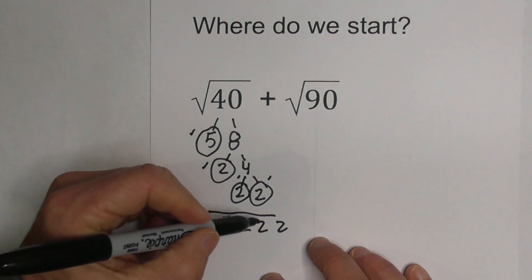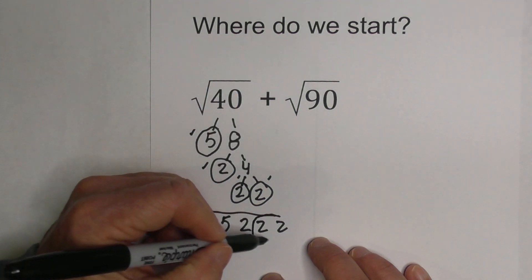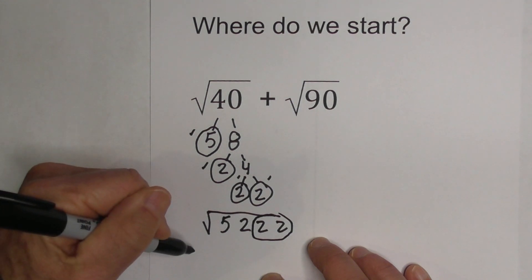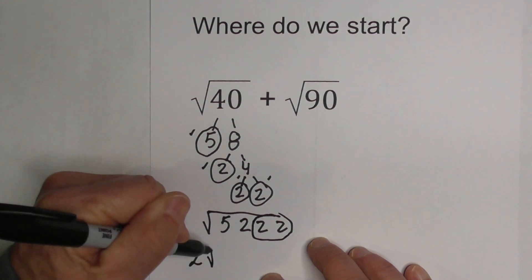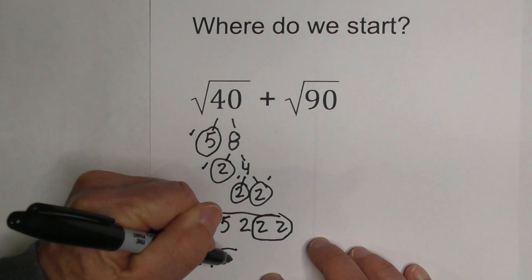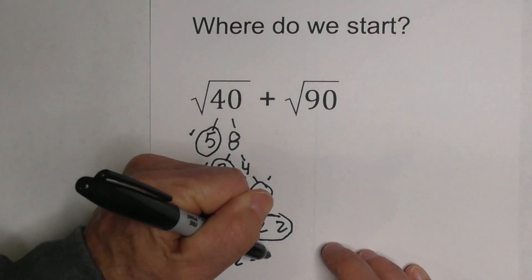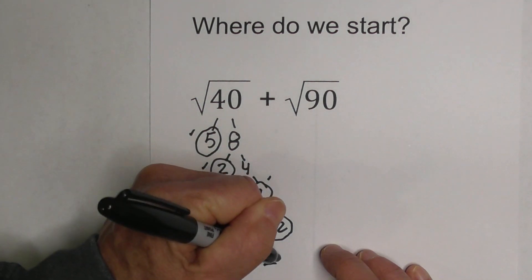I can pull out pairs, so I have a pair of twos here. So I have 2√5 times 2, which equals 2√10.